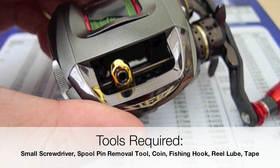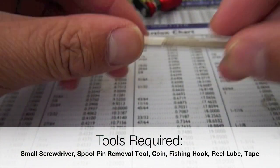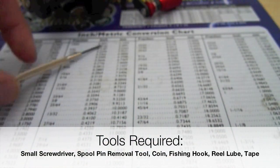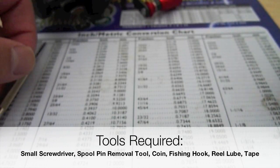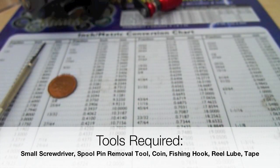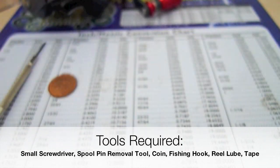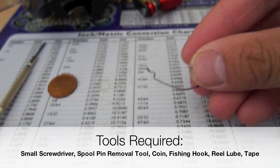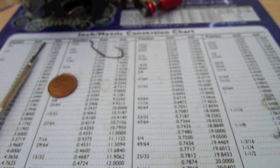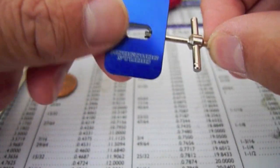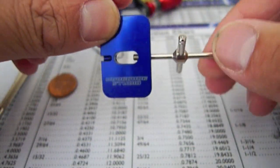First of all, you're going to need the reel, a small screwdriver, a coin, some electrical tape, a fishing hook, and a spool pin removal tool. This is the one that I use.